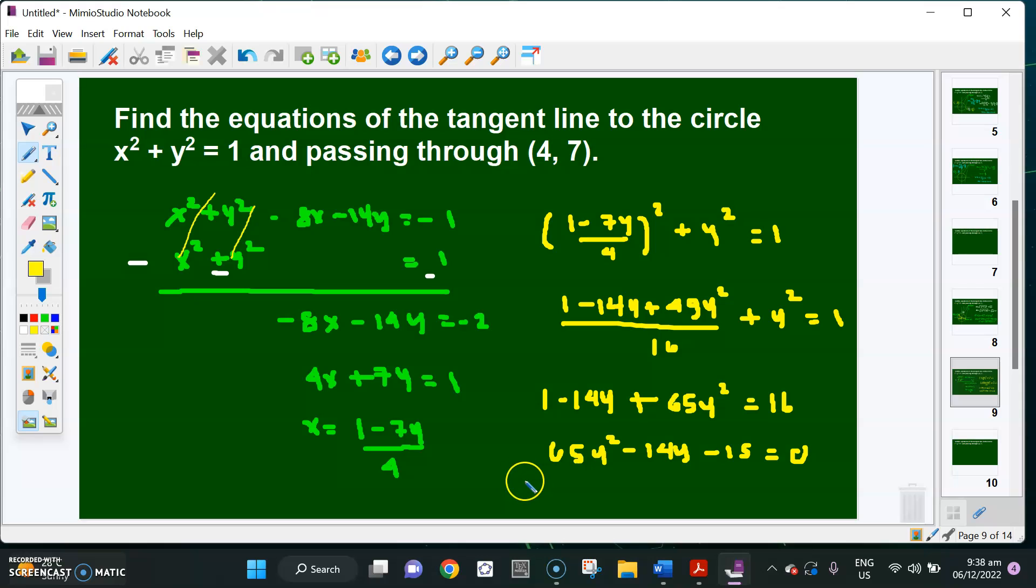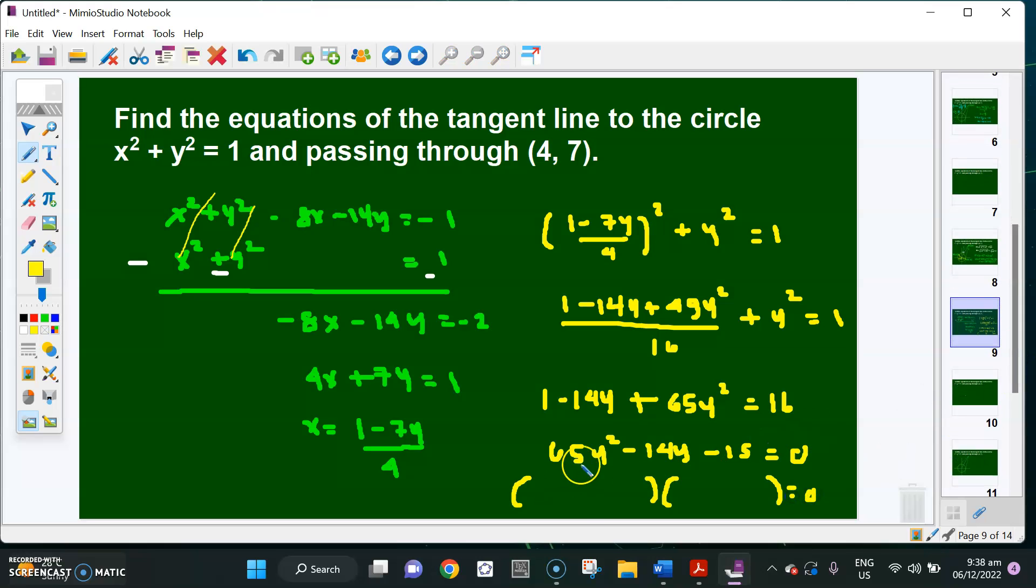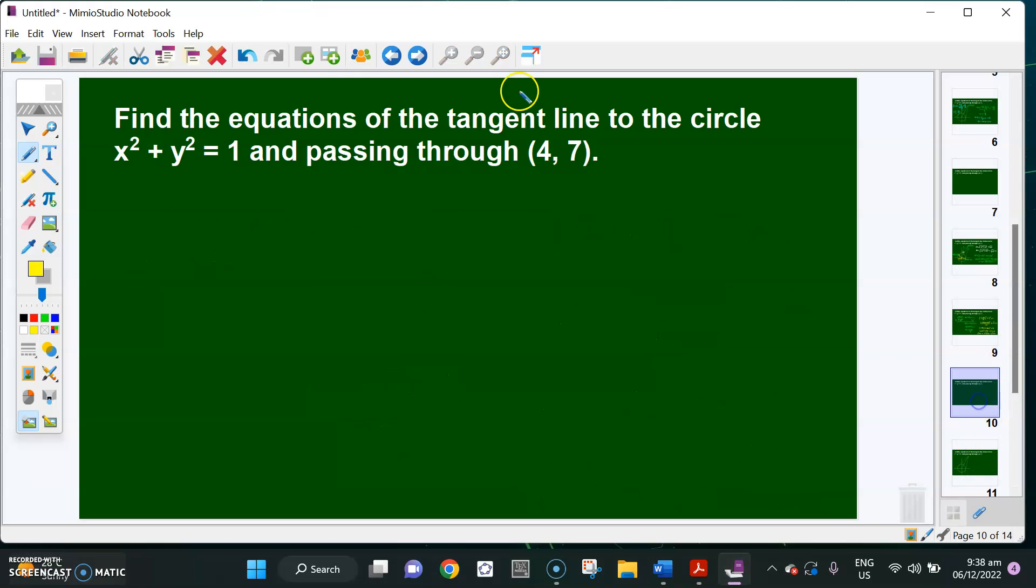The good thing about this one is that it's factorable. 65 factors into 13 and 5, both primes. One factor is 3, the other is 5. So this is (13y plus 3)(5y minus 5), which simplifies correctly as 65y squared minus 14y minus 15.